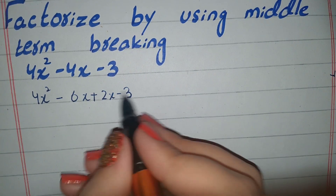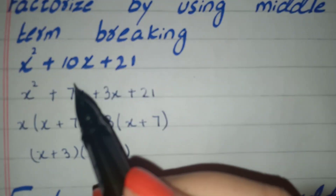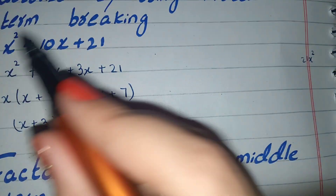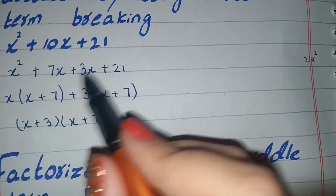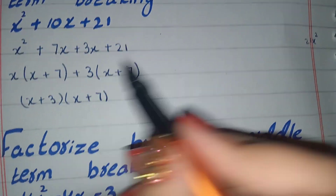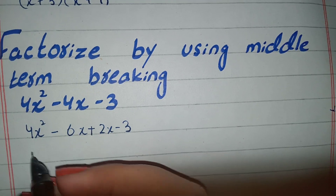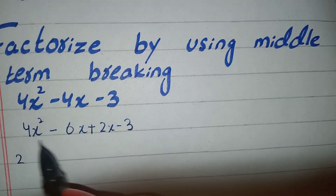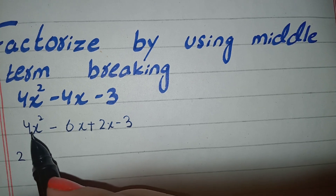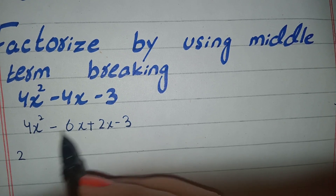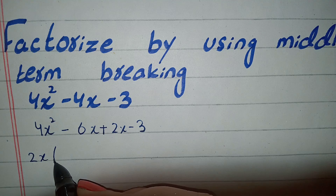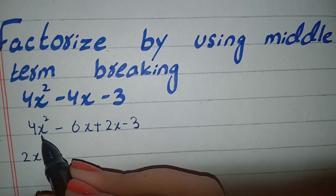Now we have to take a common. I will solve these two terms. We have to multiply 2x squared here and we can solve it. We take these two and these two. We cannot take four because it is not divisible. We can take two because it is divisible by two and six. Two is common, and we can take x squared because it is in this term. So we take the common for both groups.